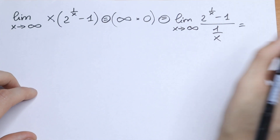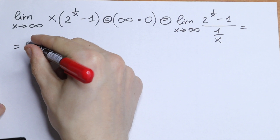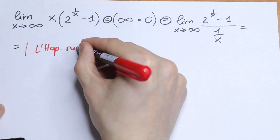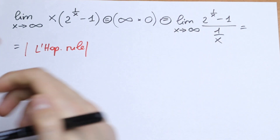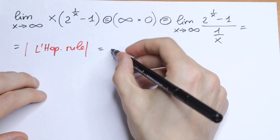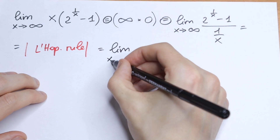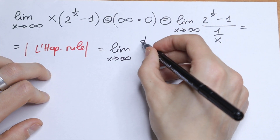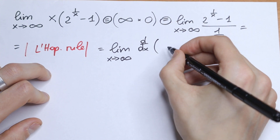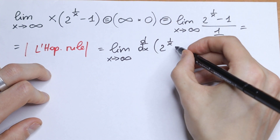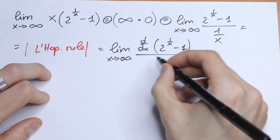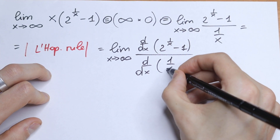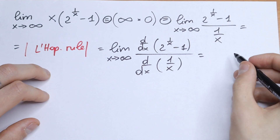So this is equal to — let's apply L'Hôpital's rule. We will take the derivative of our numerator over the derivative of our denominator. So this limit equals the limit as x approaches infinity of d/dx of (2 to the power 1 over x minus 1), over the derivative of the denominator.